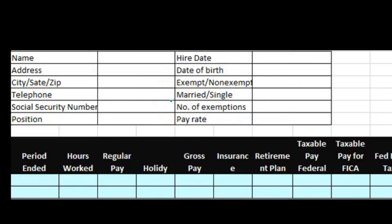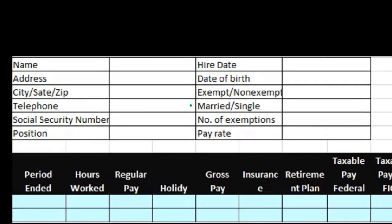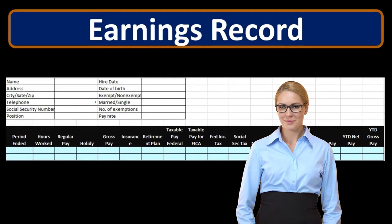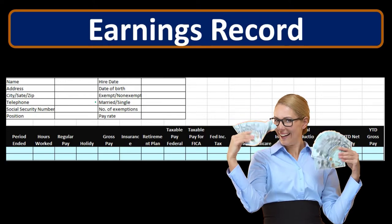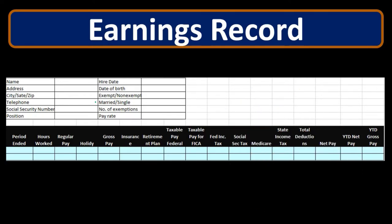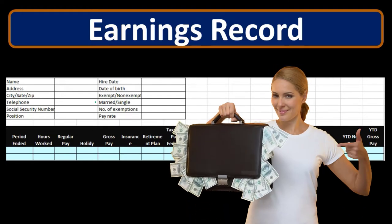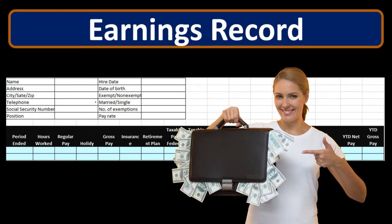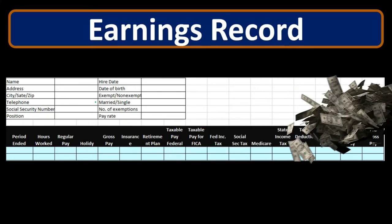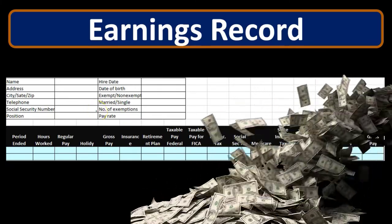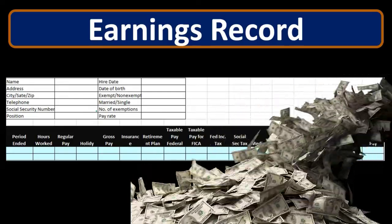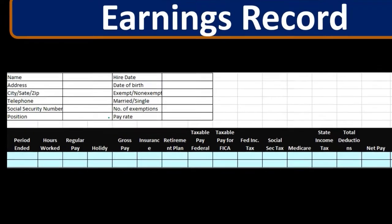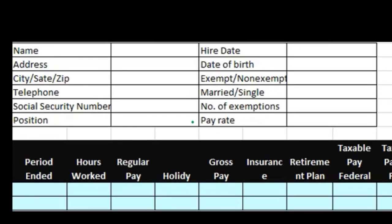We also record marital status on the earnings record. You might wonder why that matters, but when we withhold money for federal income taxes, we need to know marital status because it's a progressive tax system and affects how much to withhold. We also record number of exemptions, which relates to federal income tax withholdings, and the pay rate.